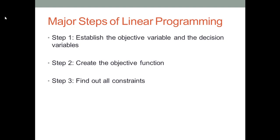If you want to perform linear programming, no matter which software you are using, you basically need to go through three major steps. First, you need to identify the objective variable — identify your goal. Second, you want to identify the decision variables in your question. Then you want to build something called an objective function, which is a mathematical equation between the objective variable and the decision variables, showing how the decision variables influence you to reach the objective variable.